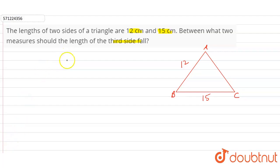So AC will lie between BC minus AB and AB plus BC.